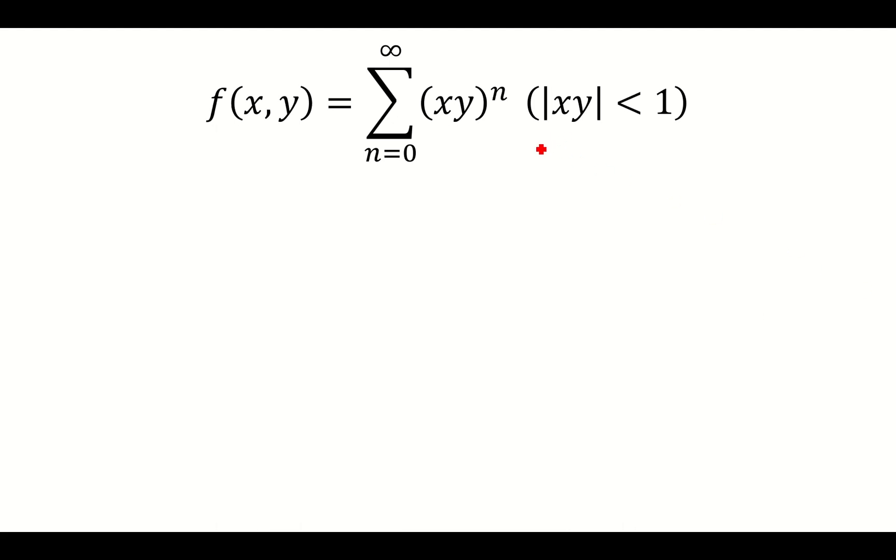The reason we have the absolute value of xy less than 1 is because this series converges, and it's going to equal 1 over 1 minus xy. This is a geometric series with common ratio equal to xy. The sum will be the first term, which is 1, over 1 minus the ratio, which is xy.